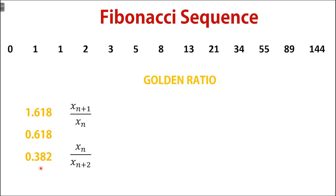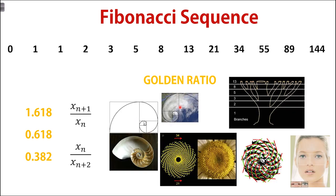The golden ratio plays an important part in nature, and you can find it in many places — in the curvature of shells, hurricanes, placement of seeds in sunflowers and pine cones, how a tree branches, and even in our faces. Mysteriously, it has been working wonders in the projection of stock prices in the stock market as well. So remember these three ratios as we'll be using them a lot throughout this video.